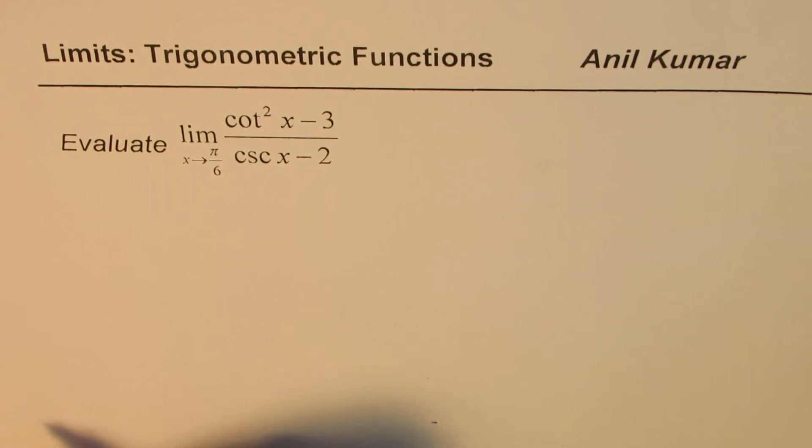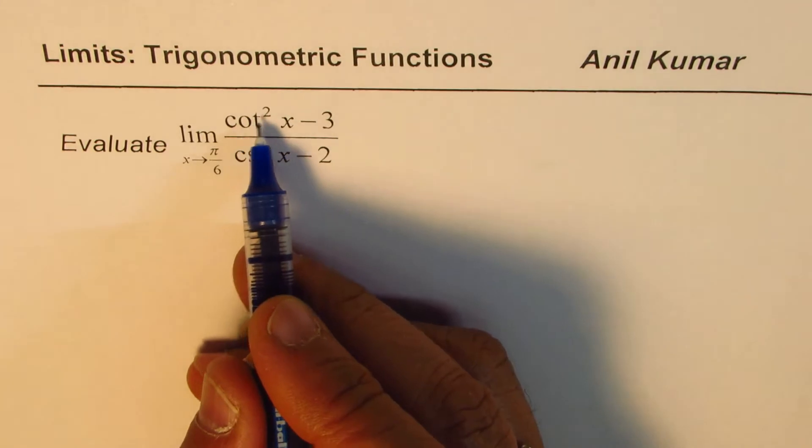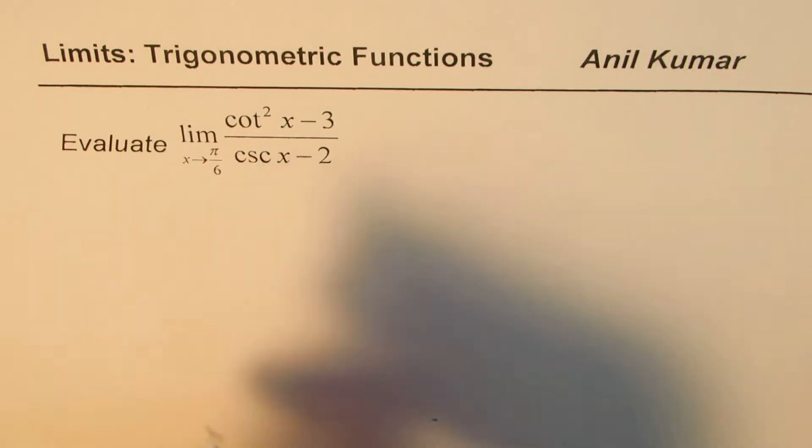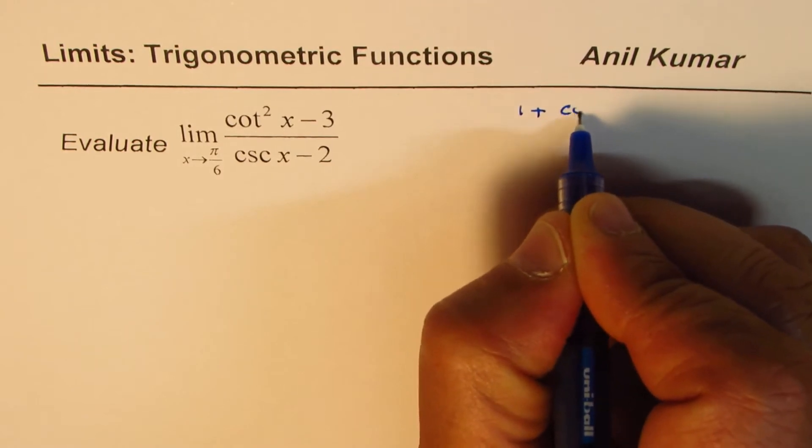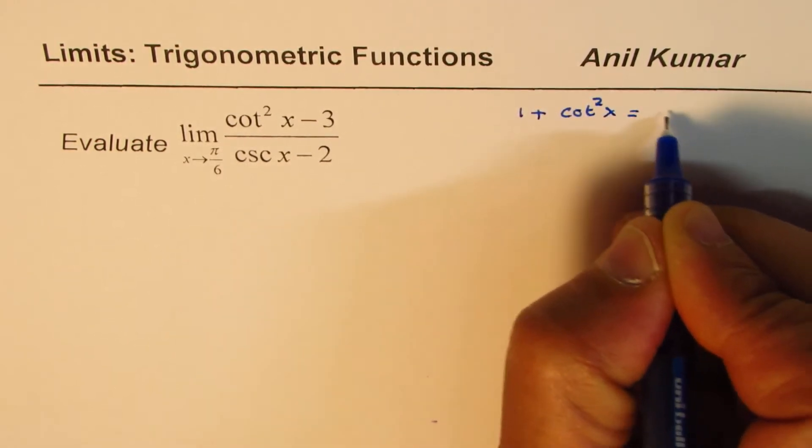One of the identities which you could use here is the relation between cot²x and csc²x. So what we have is 1 + cot²x = csc²x.